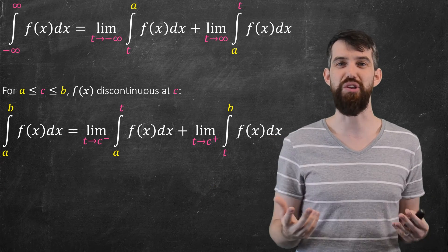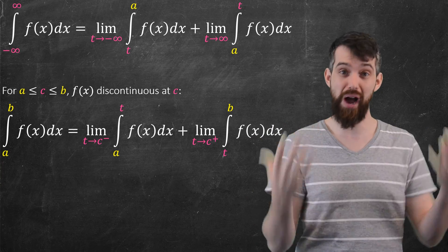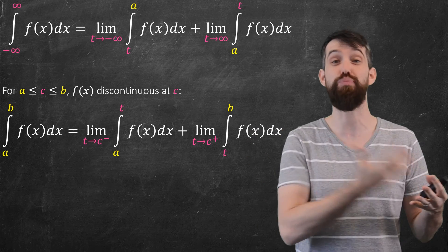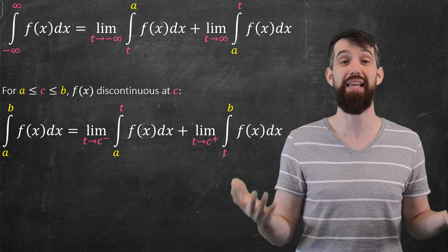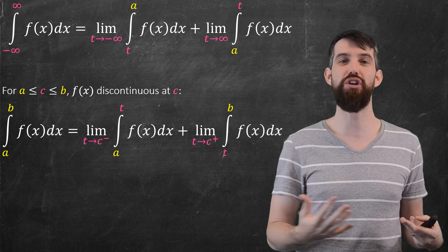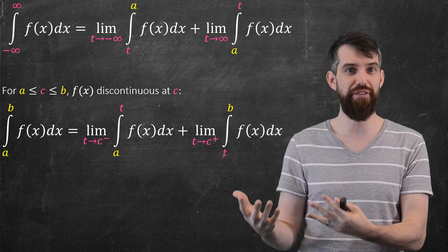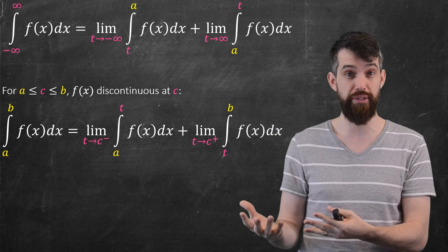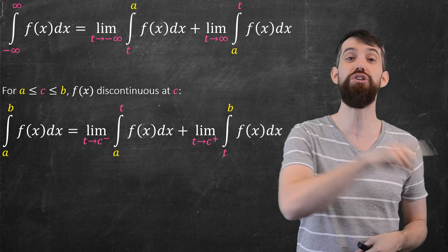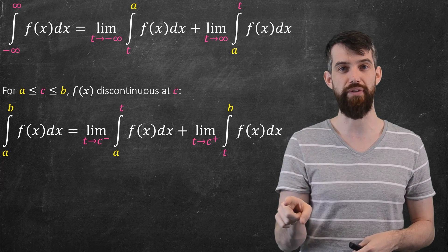You can combine these approaches: if you have multiple discontinuities combined with limits at infinity, just break the integral into as many pieces as needed. For improper integrals, it's simply a matter of converting into a limit, evaluating the integrals in the normal way, and then computing the limits. The integral either converges or diverges depending on whether those limits converge or diverge.